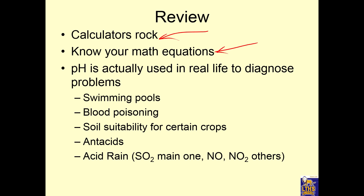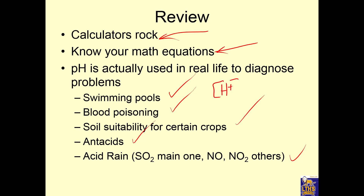pH is actually used in real life to diagnose problems. pH is used in swimming pools, tells us about blood, crop and soil suitability, antacids, and acid rain. If you have a lot of H⁺, you have a little OH⁻ — that's an acid. If you have little H⁺, you have a lot of OH⁻ — that's a base. Concentrations are hard to talk about when they're small, so we change it to pH.